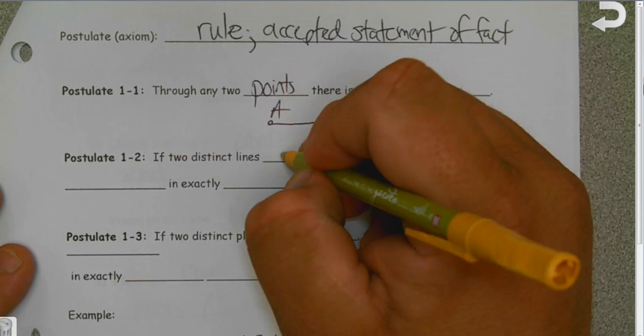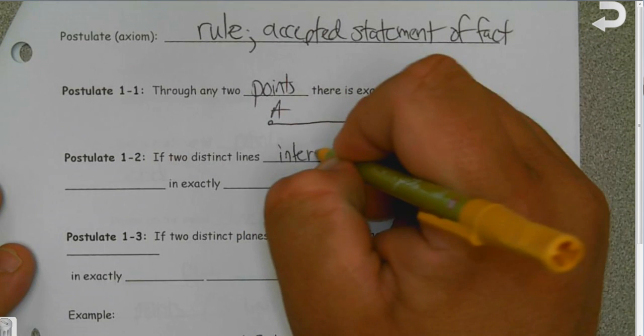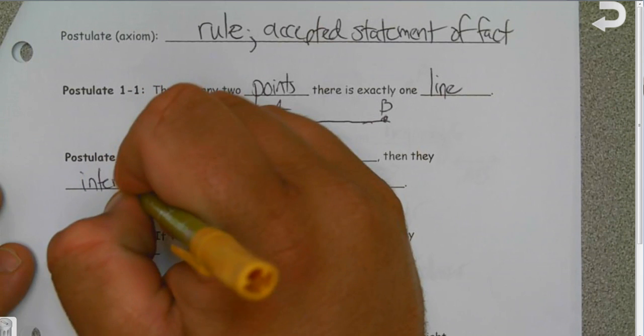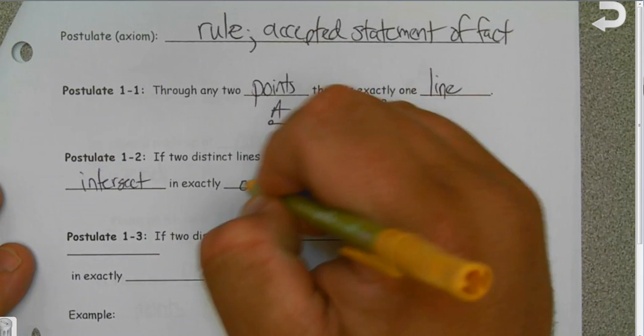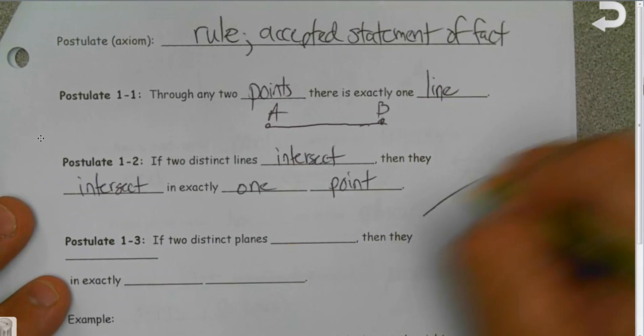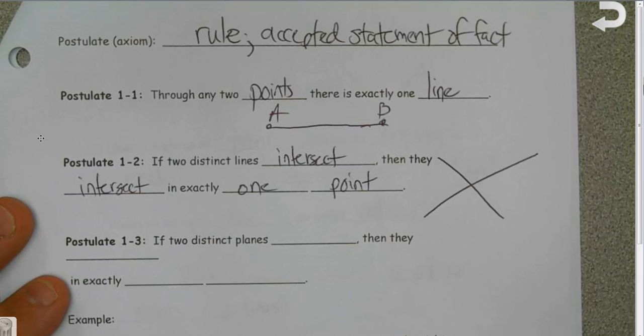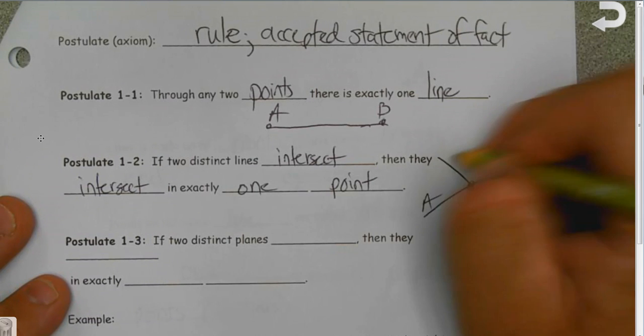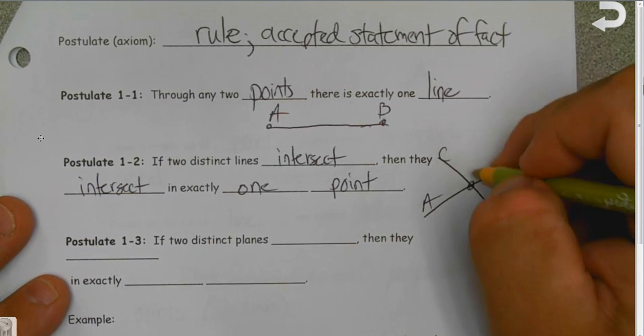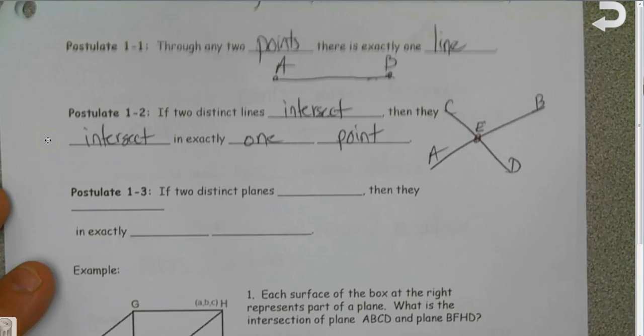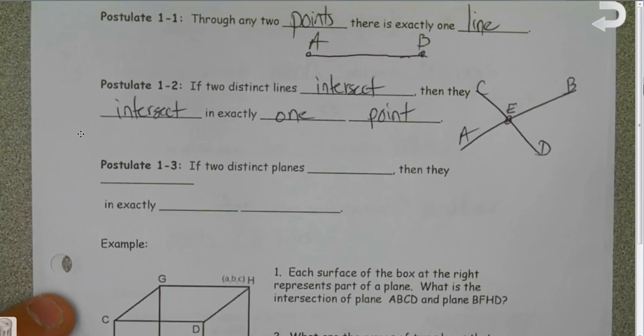If two lines intersect, then they intersect in exactly one point. That's also important because if I have two lines and they intersect, they only intersect here. So if I have AB and CD, they only intersect at a new point that we can call E.